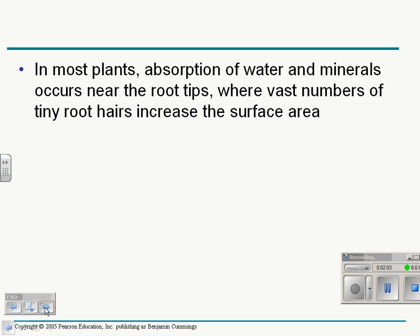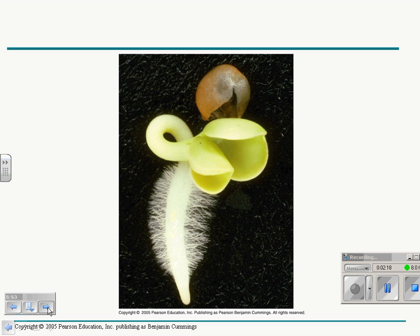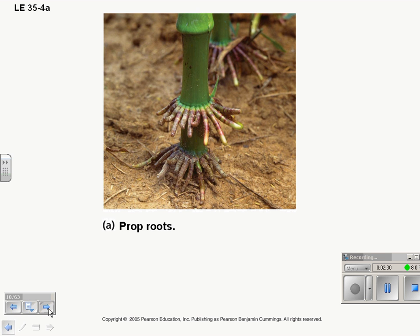And then some examples quickly. In most plants, absorption of water and minerals occurs near the root tips. And we'll talk about this more in chapter 39. Because roots have root hairs that increase the surface area of the roots. And so if we take a look at this, here's a growing, here's the seed. It just sprouted and you can see this big section of root hairs there that are growing.